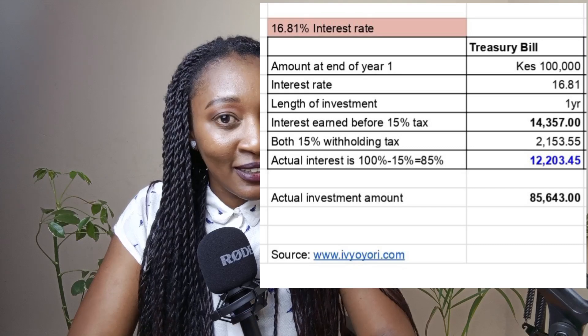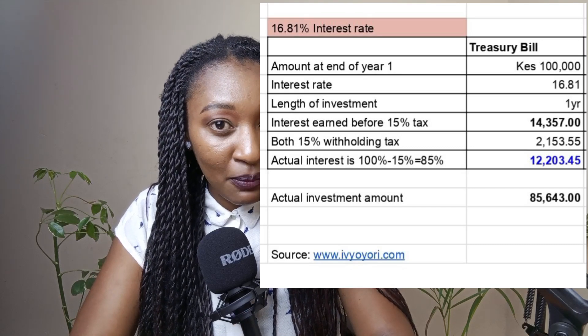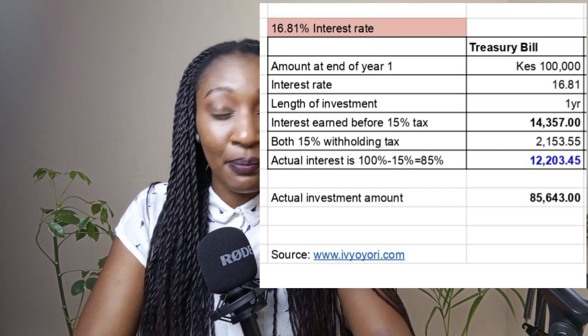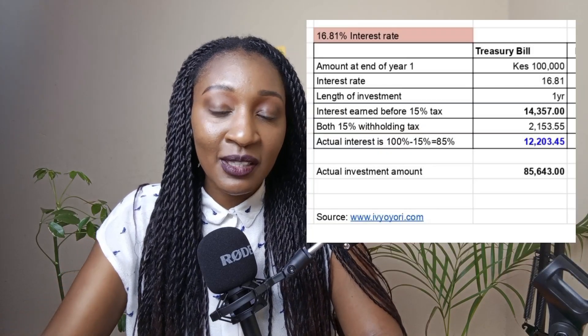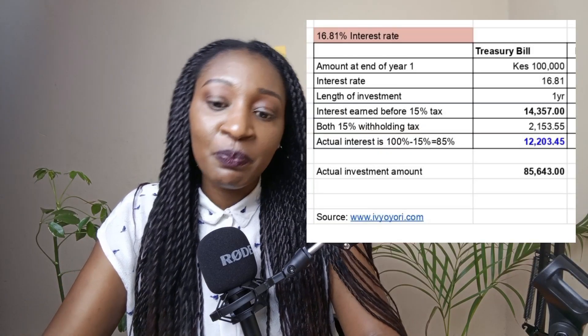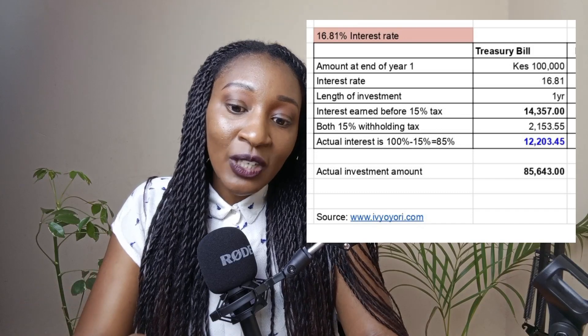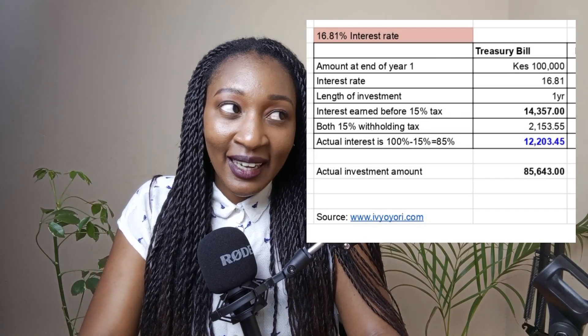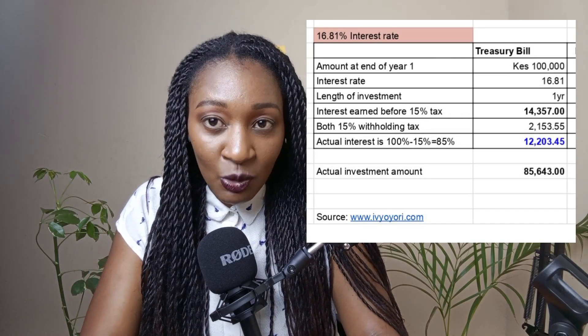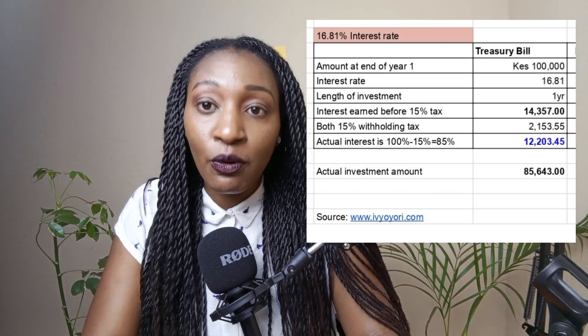But then there's the tax element — the 15% withholding tax. The 15% is going to be taken off the interest that we've earned, which was 14,357 shillings. So the actual interest that you are going to get in your account is 12,203.45 shillings.